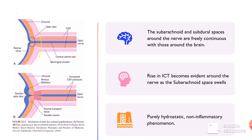Any rise in intracranial pressure will become evident around the nerve. Sometimes the subarachnoid space will swell and become so distended that it becomes ampulliform just behind the globe. As a result of raised ICP, papilledema is purely a hydrostatic collection of fluid. There is no inflammatory component in papilledema.